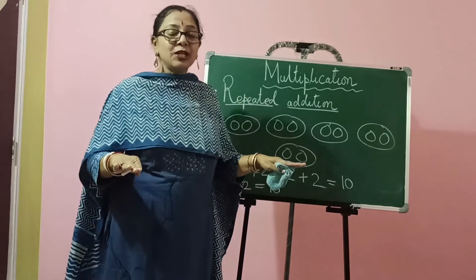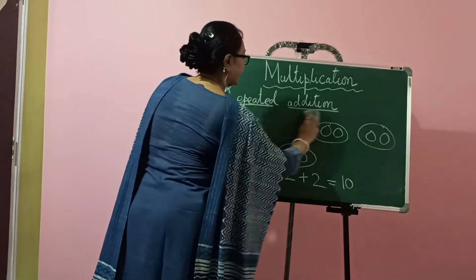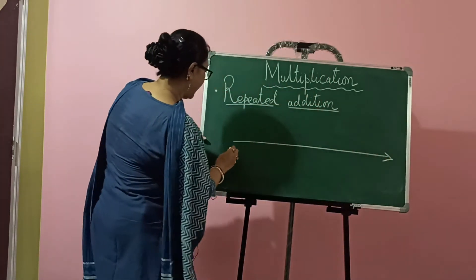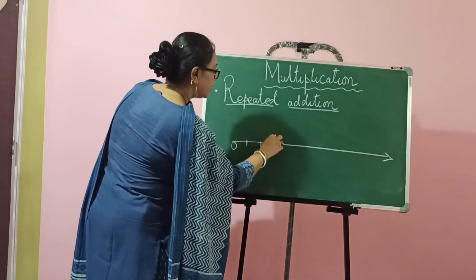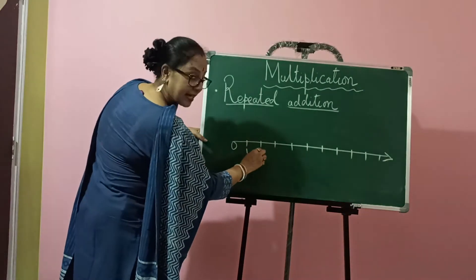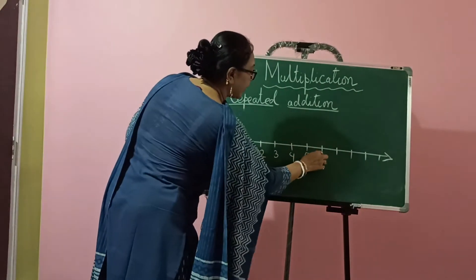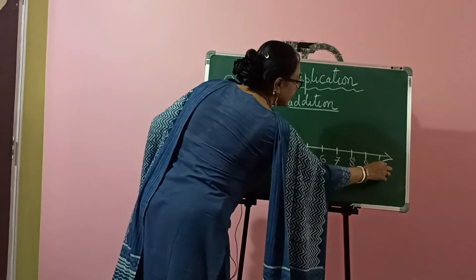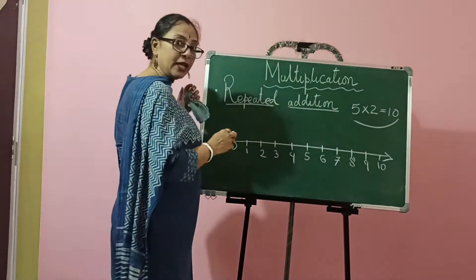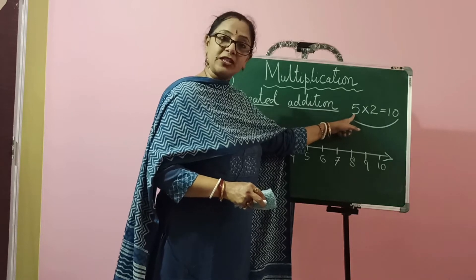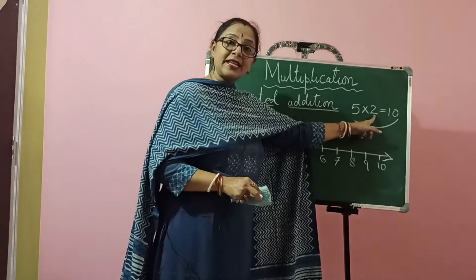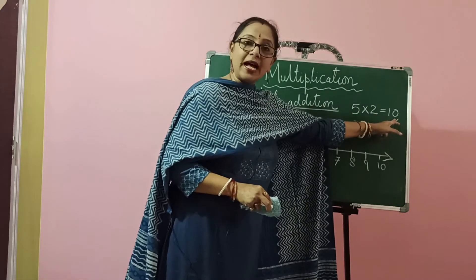Let us understand the same fact by placing it on the number line. Let's draw the number line first. We have a number line starting from 0 and going up to 10. Now, 5 here is called the multiplicand because this is the number which has been multiplied. The number with which we multiply — here 2 — is called the multiplier, and the result or the answer is called the product.